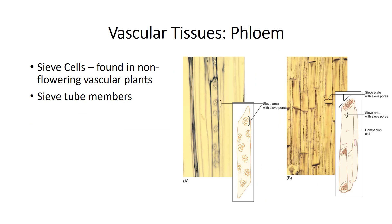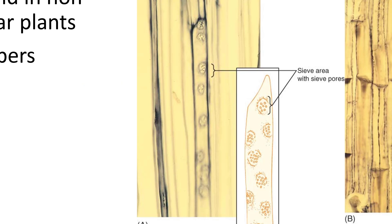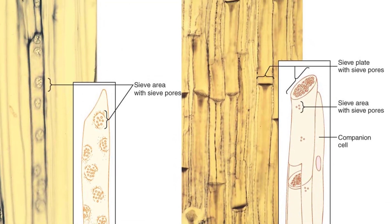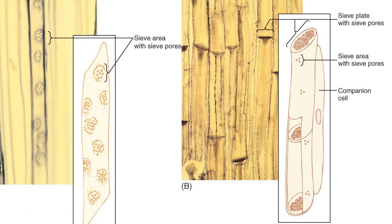Phloem has two types of conducting cells: sieve cells and sieve tube members. The term sieve element refers to either. They develop from parenchyma cells that remain alive; plasmodesmata enlarge to become sieve pores, which aggregate in sieve areas. A sieve cell is elongated and tapered with sieve areas distributed over its surface; this type is found in older fossils and in non-flowering vascular plants. Sieve tube members are similar to the vessel members of xylem; sieve plates on each end wall align vertically to form a sieve tube, allowing more effective flow of sap. All angiosperms have sieve tubes; none of the non-angiosperms have them.